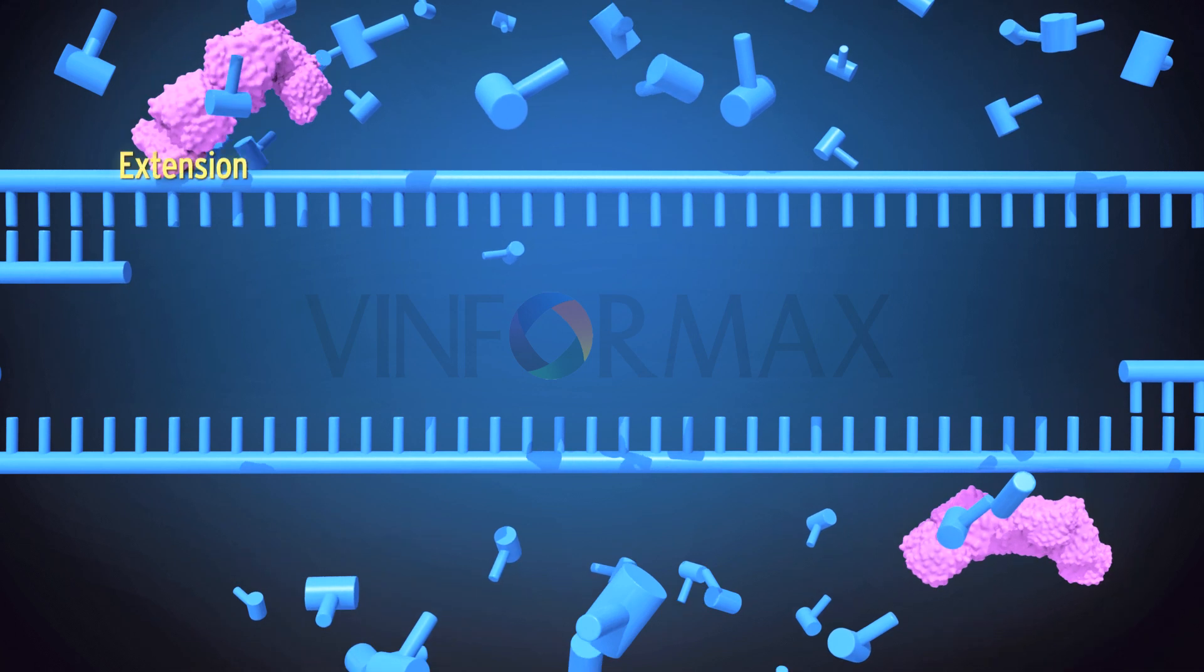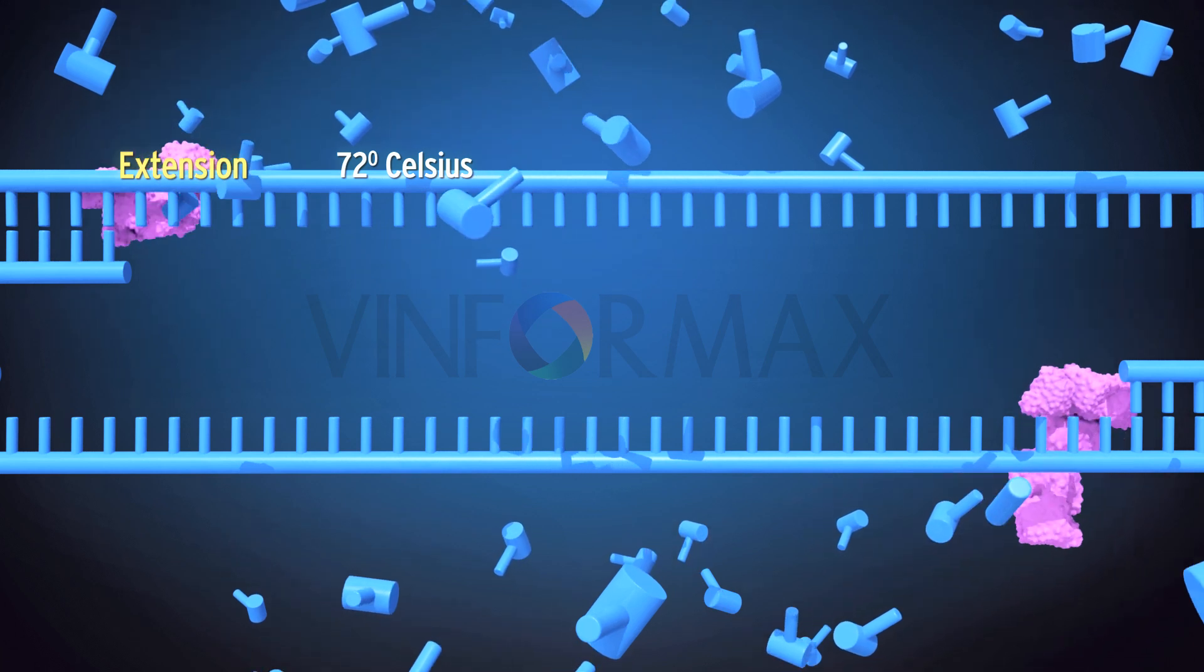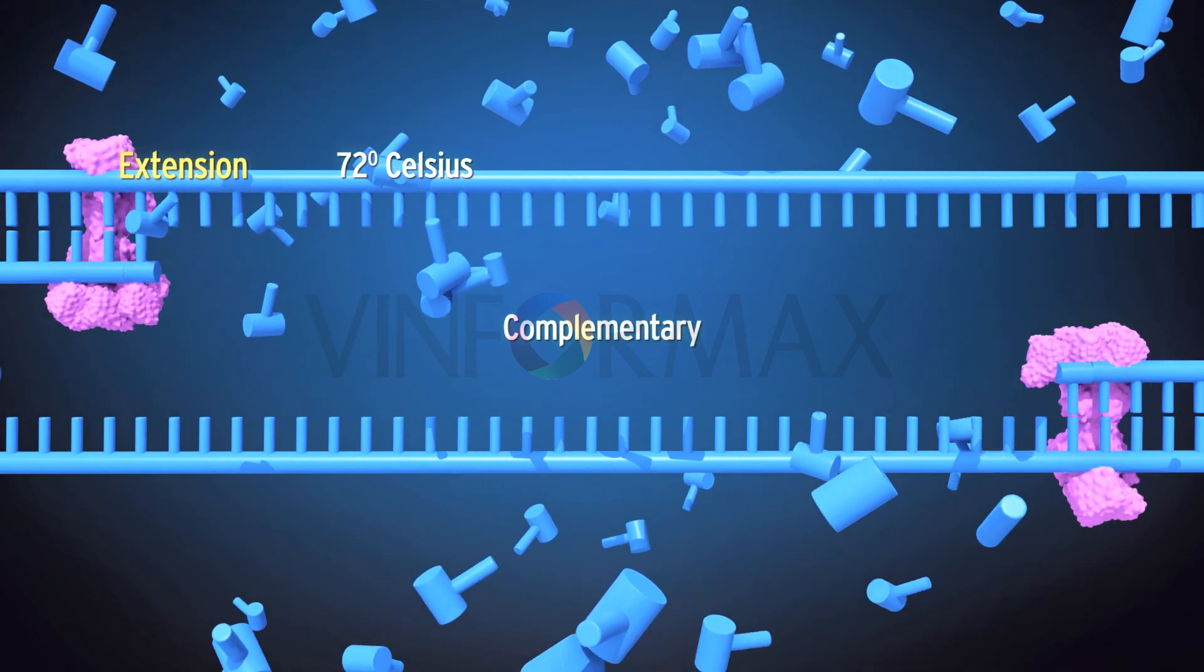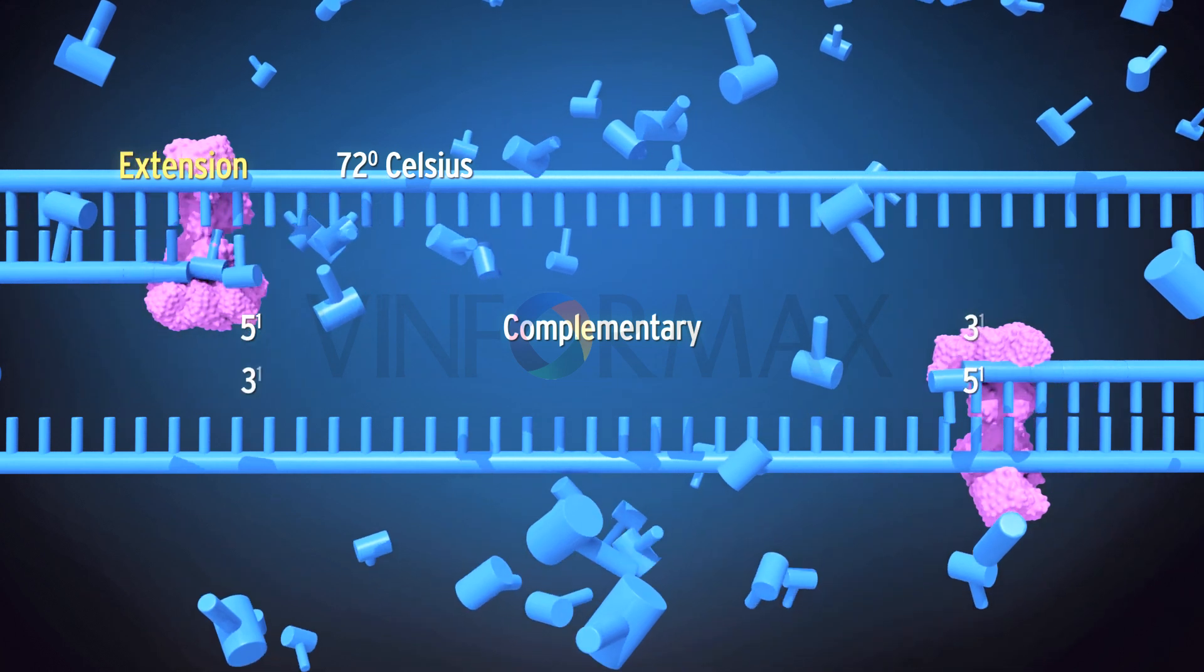Extension: at around 72 degrees Celsius, the polymerase adds nucleotides complementary to the strands in the 5 prime to 3 prime direction.